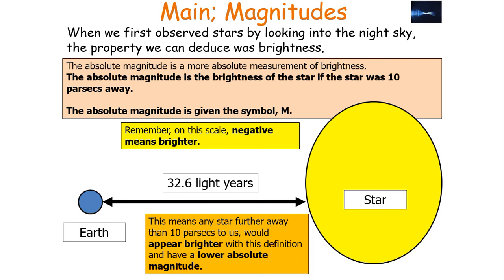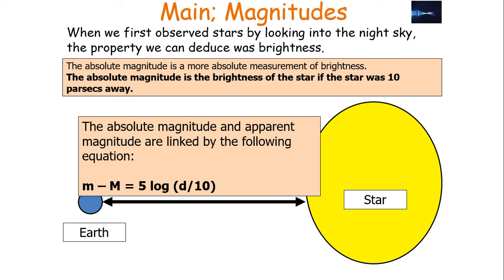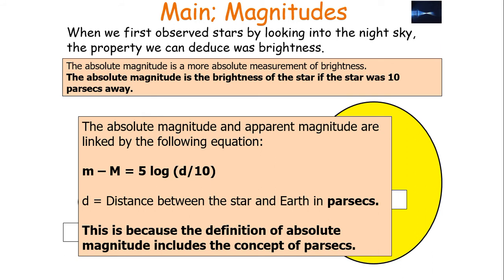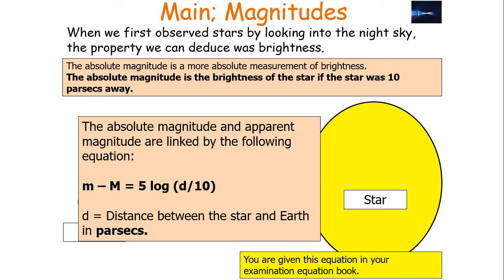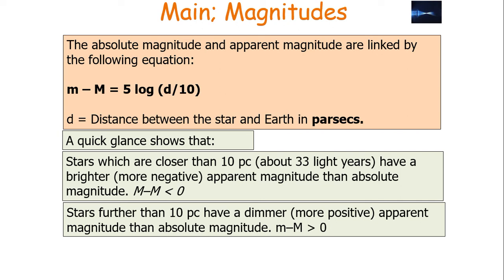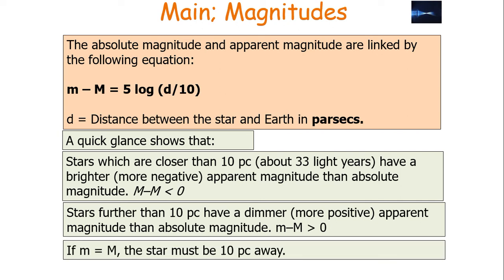Any star further than 10 parsecs would appear brighter with this definition and have a lower absolute magnitude — remember, negative means brighter on this scale. The absolute and apparent magnitudes are linked by the equation: small m minus big M equals 5 log(d/10), where d is the distance between the star and the Earth in parsecs. We must use parsecs because the definition of absolute magnitude includes the concept of parsecs. This equation is provided in your examination equation book. Stars closer than 10 parsecs have a more negative apparent magnitude than absolute magnitude (small m minus big M less than 0), stars further than 10 parsecs have a more positive apparent magnitude (small m minus big M greater than 0), and if small m equals big M, the star is exactly 10 parsecs away.